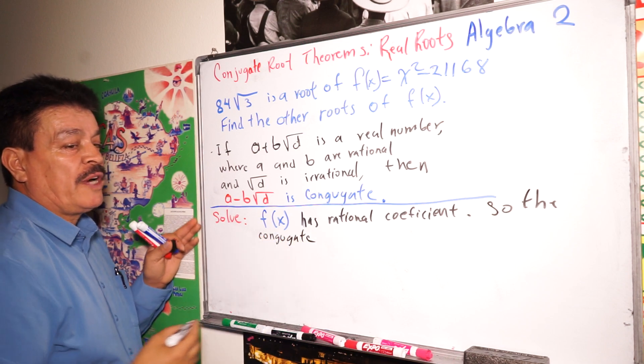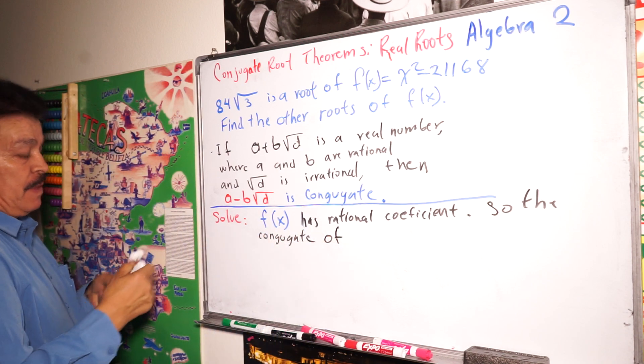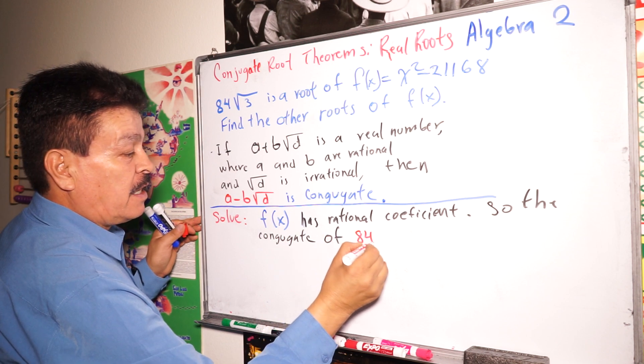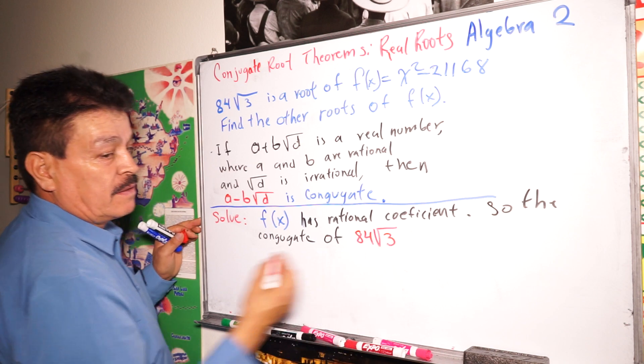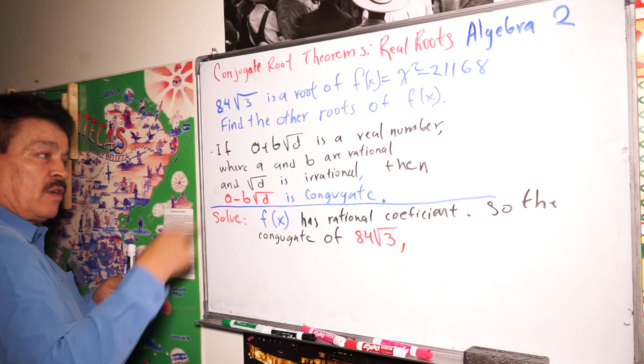Conjugated of which problem? This one. 84 times square root of 3. The conjugated, which times square root of 3.